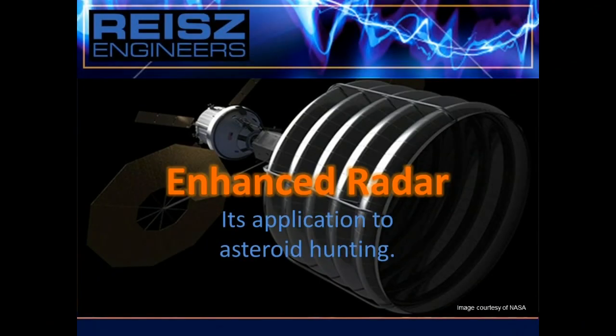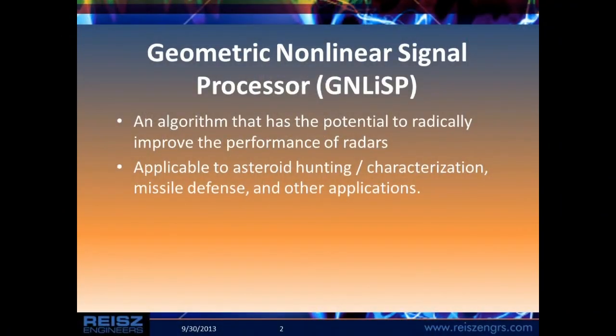Let's move to the last presentation in this section. Tom Burleson from Rice Engineering talking about a geometric nonlinear signal processing algorithm to enhance range performance of NASA radars for tracking asteroids. I am not the planned presenter — the planned presenter is having some difficulty in Huntsville. What we have is a geometric nonlinear signal processor, or GenLISP, developed to increase either the radar range or the size of radar objects that could be detected with phased array radars. It is applicable to asteroid hunting and characterization as well as missile defense applications.